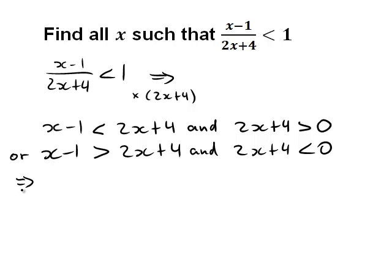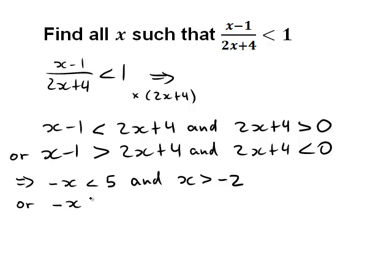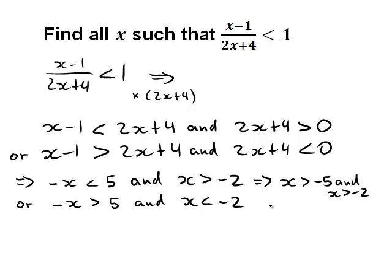Let's solve these. The first line: x minus 1 less than 2x plus 4 simplifies to minus x less than 5, subtracting 2x from both sides and adding 1. And 2x plus 4 greater than 0 simplifies to x greater than negative 2. The second line simplifies to minus x greater than 5, and x is less than negative 2.